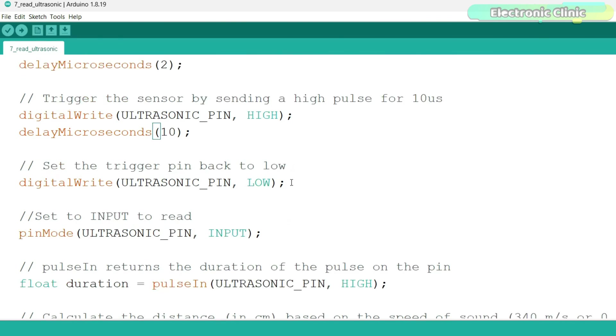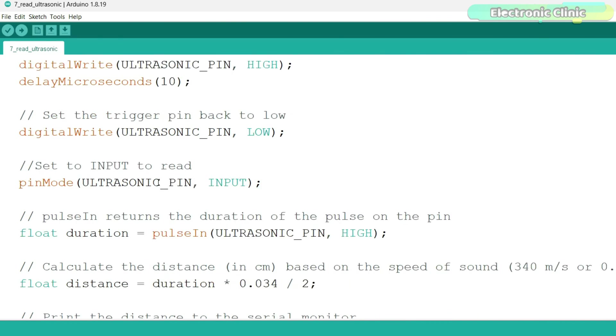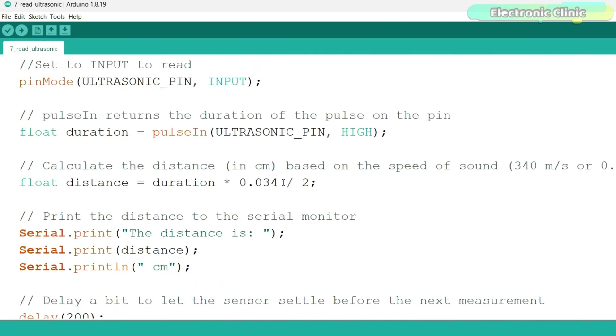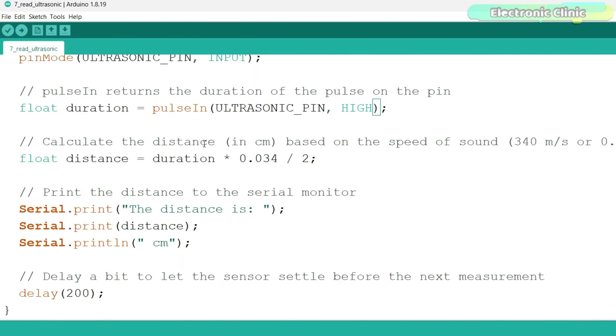Next, we set the trigger pin back to low, then we set it to input to read the signal. The pulseIn returns the duration of the pulse on the pin. Then we calculate the distance in centimeters based on the speed of sound, 340 meters per second or 0.034 centimeters per microsecond, and don't forget to divide it by 2.